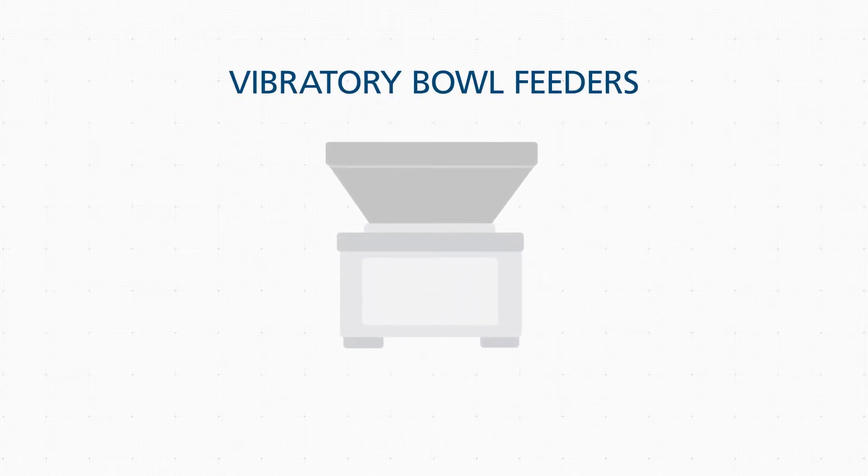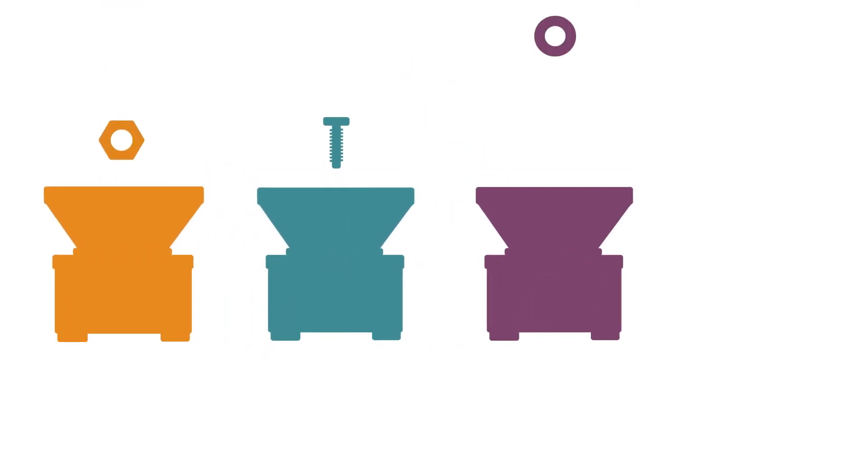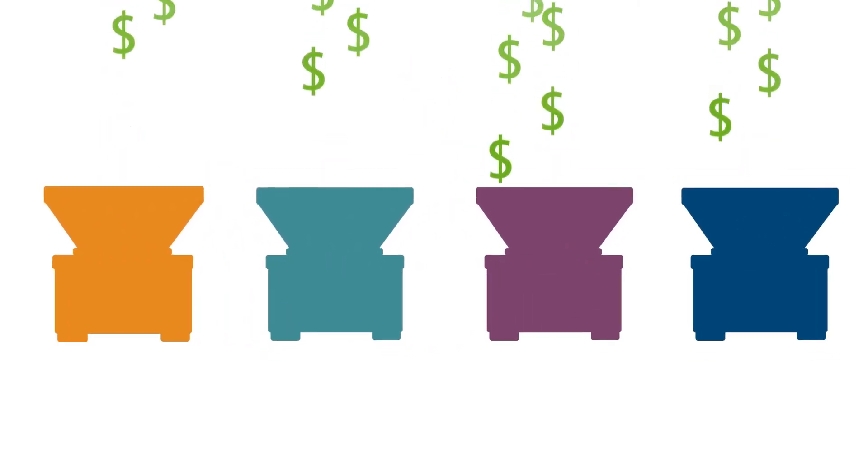But established products, such as vibratory bowl feeders, are complicated, fixed, and offer no quality control. They're fixed to only feed one part in their lifetime, so if you require a feeder for every part in your process, that can quickly add up.